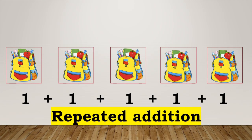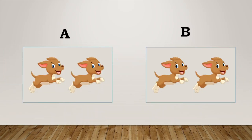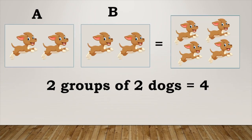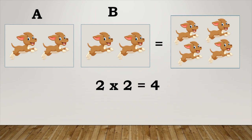Let us look at another example. Group A and group B have two dogs each. That makes it four dogs altogether. Two plus two equals four. Two groups of two dogs equal four. Two times two equals four. Two multiplied by two equals four.